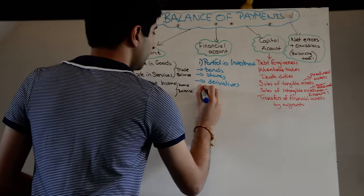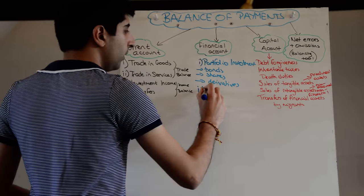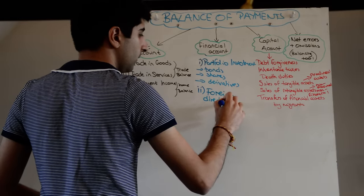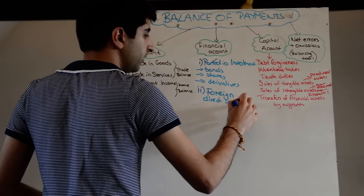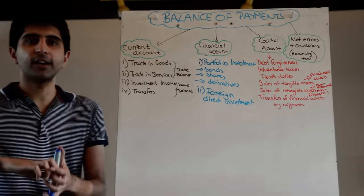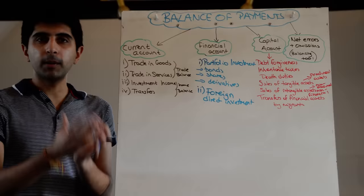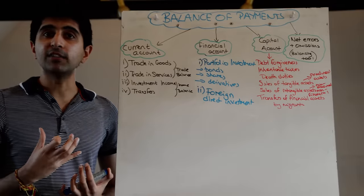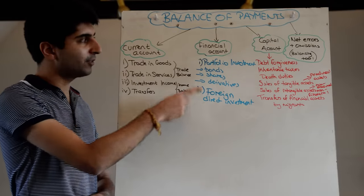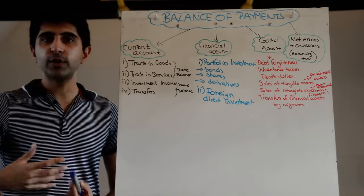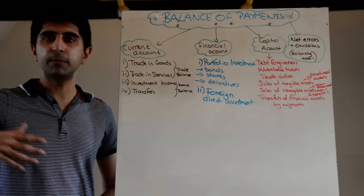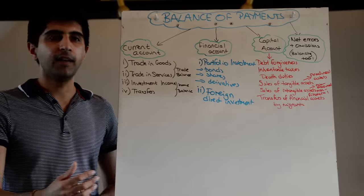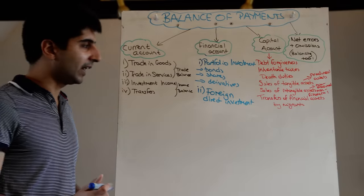Another part of the financial account is foreign direct investment flows. If a German firm sets up a factory or shops in the UK, that's money entering the UK — a credit in the FDI part of the financial account. Similarly, if UK firms shut down and move to other countries, that's a debit — an outflow of money recorded in the foreign direct investment part of the financial account.